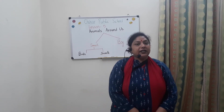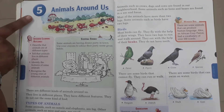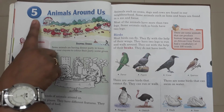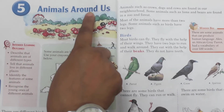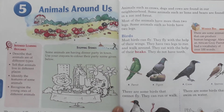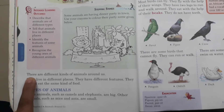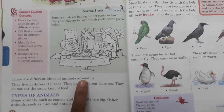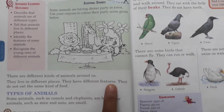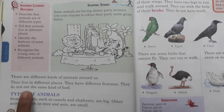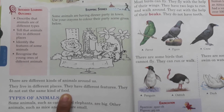Now get ready to see colourful pictures in the book — open page number 36. Finger on the line which I am reading. Ma'am already guided you how to do lesson 5 — Animals Around Us. This activity we have already done yesterday. Now we are going to read from the first line. There are different kinds of animals around us. They live in different places. They have different features. They do not eat the same kind of food — sub animals alag-alag type ka khana khate hai.